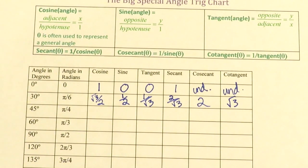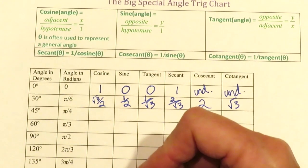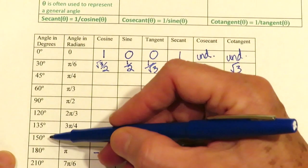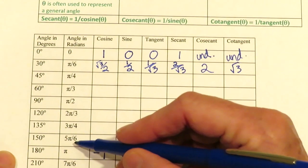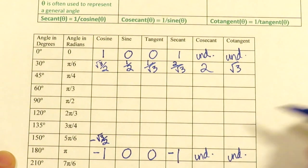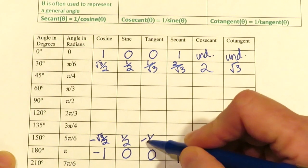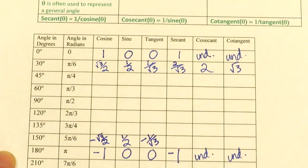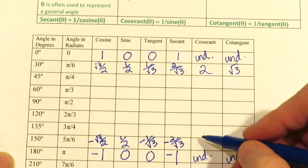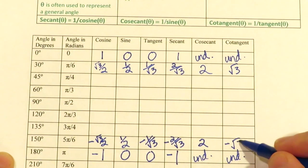30 degrees matches up with 150 degrees because it's 30 degrees from the x-axis. At 5π/6 or 150 degrees, x is now negative because we're in quadrant 2, sine is positive so it's still 1/2, tangent is now negative because you're dividing a positive by a negative, secant is negative 2 over the square root of 3, cosecant is positive 2, and cotangent is negative square root of 3.